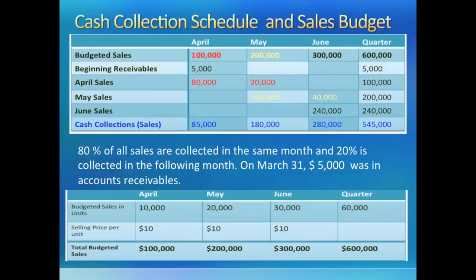The first step in the cash budget is to calculate total cash available each month, which is the beginning balance of cash plus all cash receipts. Before we make the actual cash budget, we will do two side calculations. The first one is called a cash collection schedule, which shows how much cash the company will receive each month. To make a cash collection schedule, we will need budgeted sales revenue and the company's collection policy, so we have copied the sales budget and the relevant collection policy information at the bottom half of the slide for easy reference.